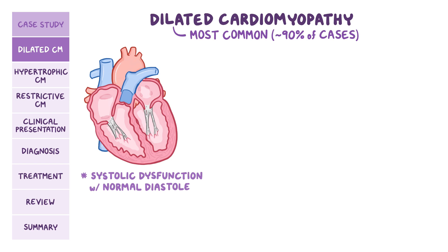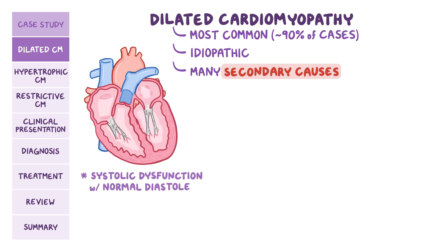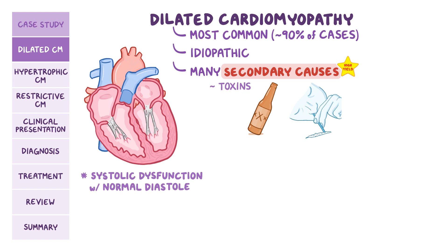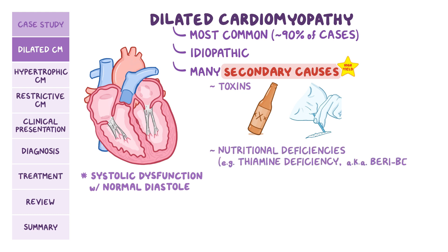When it comes to the etiology of dilated cardiomyopathy, the large majority of cases are idiopathic, meaning the cause can't be identified. However, there are many secondary causes that must be excluded first. Examples include toxins like chronic alcohol or cocaine abuse, nutritional deficiencies like thiamine deficiency, also called beriberi, or selenium deficiency.